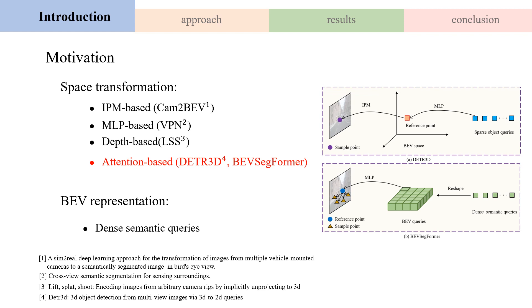Second, our method directly predicts a reference point on image feature space through an MLP operator. In this way, the view transformation of our method does not rely on camera extrinsic parameters.